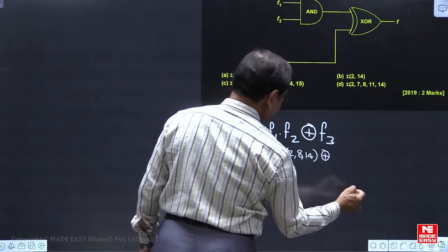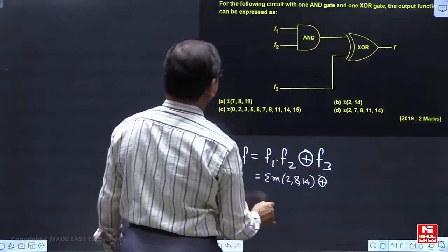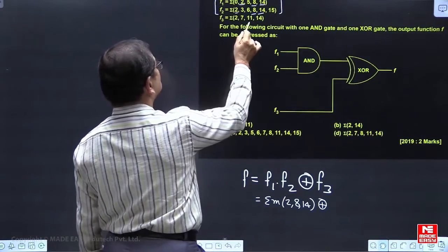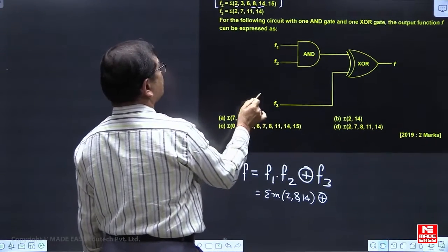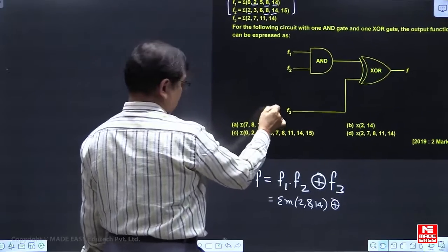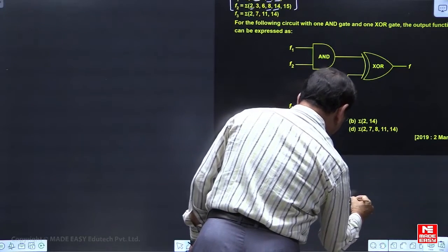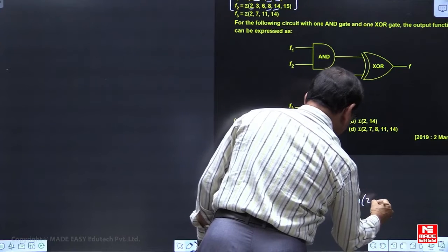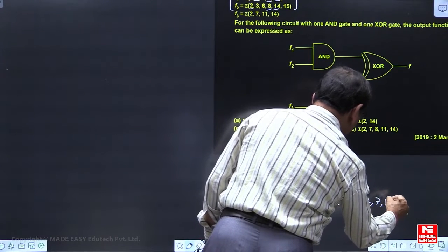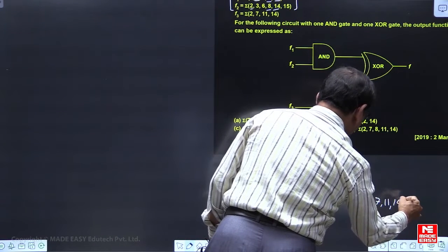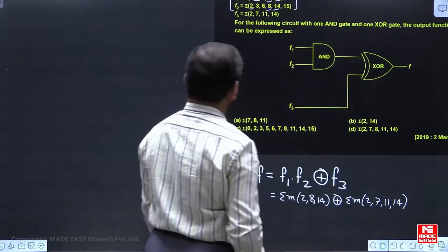And f3 minterms we are looking, f3 minterms hai, 2, 7, 11 and 14. 2, 7, 11, 14.